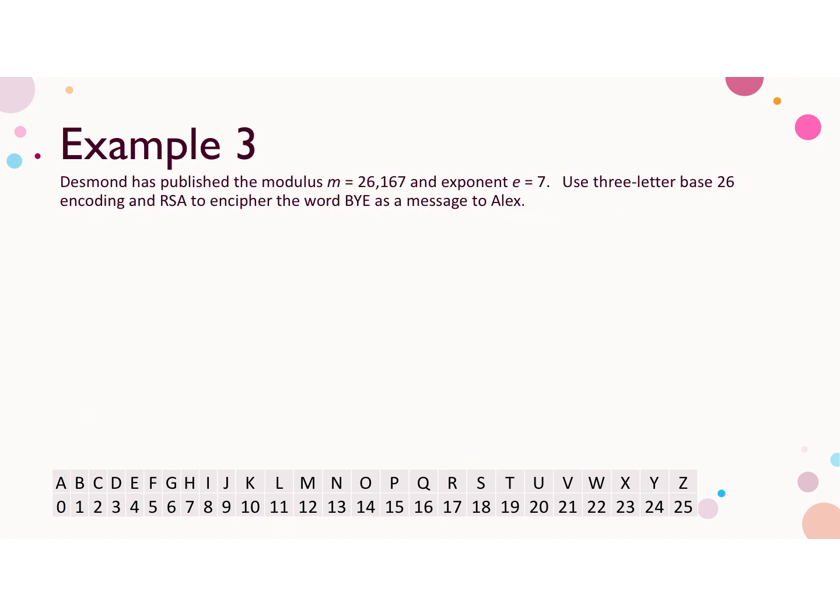Example 3, Desmond has published the modulus M equals 26,167, and exponent E equals 7. We're going to use 3 letter base 26 encoding, this time instead of 4 letter, and then the RSA algorithm to encipher the word BY as a message to Alex. So there's two steps to this. First of all, we need to use 3 letter base 26 encoding to encipher the word BY, and then we'll use the RSA algorithm with the given values of M and E to encipher or encrypt that word.